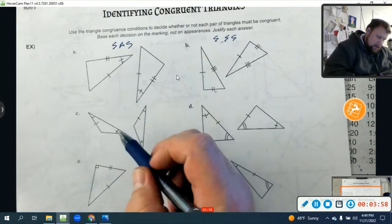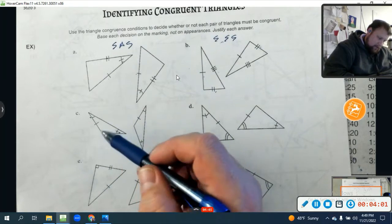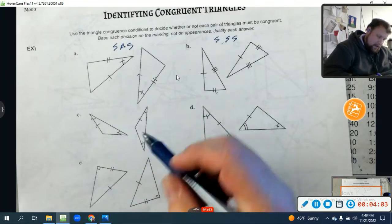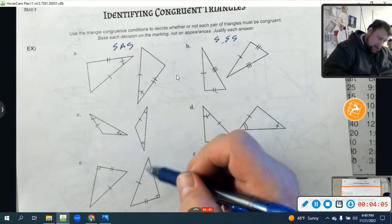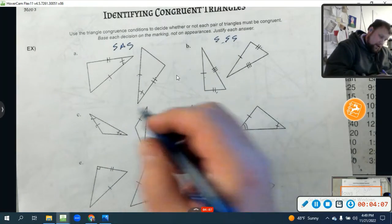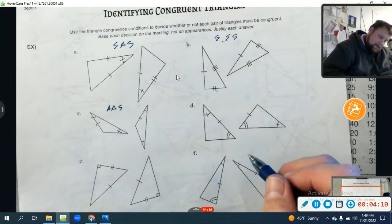All right? Let's look at this one. I have an angle, an angle, and a side. Angle, angle, side. Therefore, C is what? Angle, angle, side. Exactly what it says.